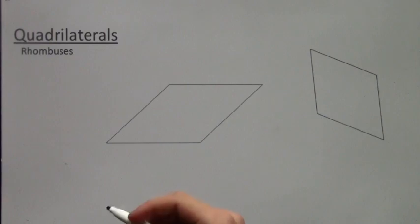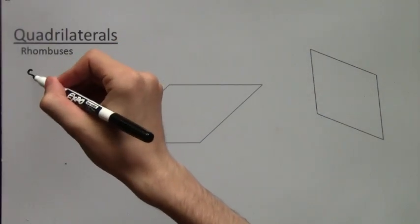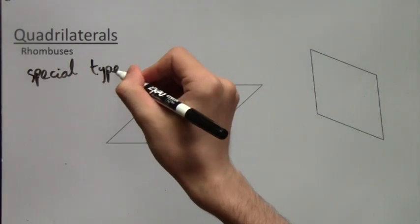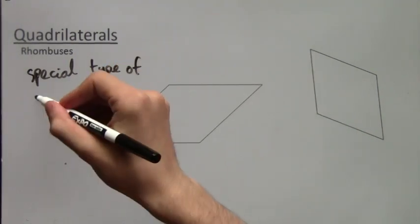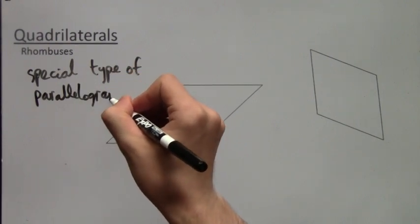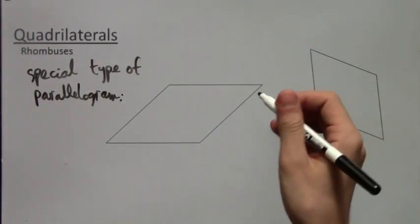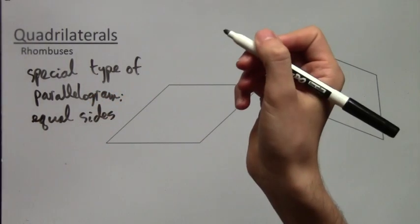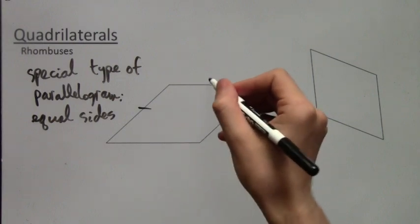Rhombuses. So rhombuses are actually just a special type of parallelogram. So that means that they still have to have pairs of opposite parallel sides. But they have to have an additional thing to this parallel property. That is, all four sides must be equal.